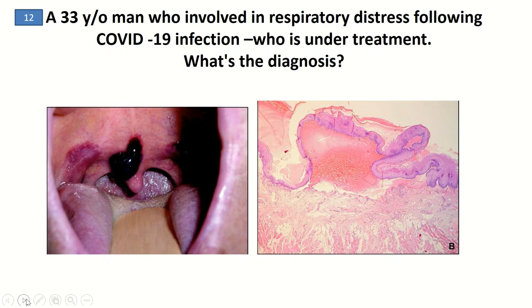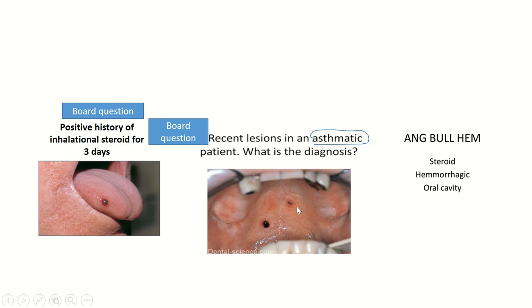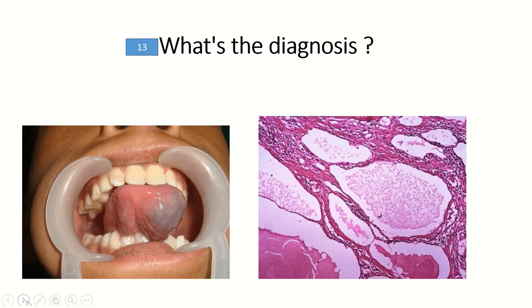This question is repeated in board examinations many times. Other examples of this diagnosis are called angina bullosa hemorrhagica. The key findings of this diagnosis are steroid spray intake, hemorrhagic bulla, and involvement of the oral cavity. Test makers mention a patient who is asthmatic or receiving inhalational steroids.